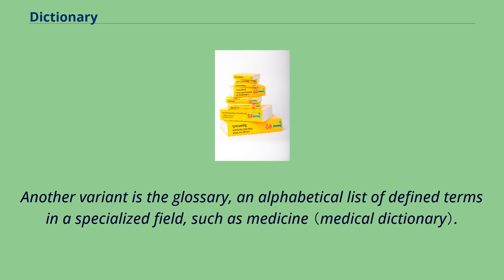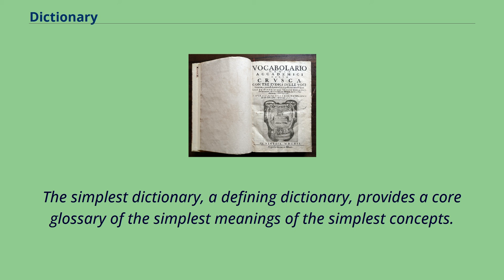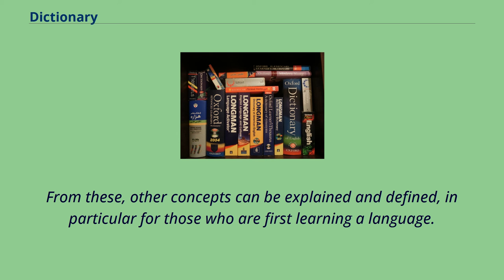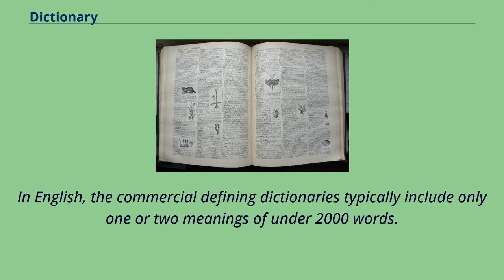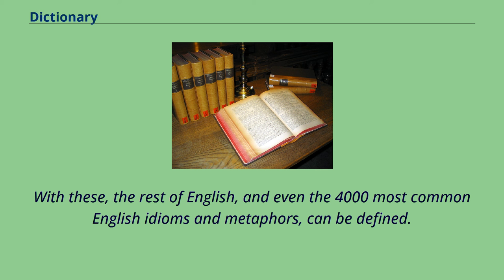Another variant is the glossary, an alphabetical list of defined terms in a specialized field, such as medicine. The simplest dictionary, a defining dictionary, provides a core glossary of the simplest meanings of the simplest concepts. From these, other concepts can be explained and defined, in particular for those who are first learning a language. In English, the commercial defining dictionaries typically include only one or two meanings of under 2,000 words, with which the rest of English, and even the 4,000 most common English idioms and metaphors, can be defined.